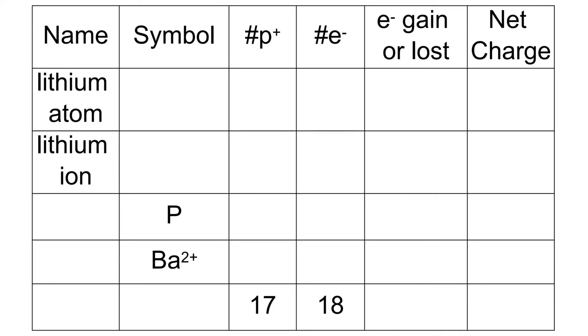When we look at the number of protons using our periodic table, we see that it is 3. Since it's an atom, the number of electrons will equal the number of protons, so therefore we'll have 3 electrons.